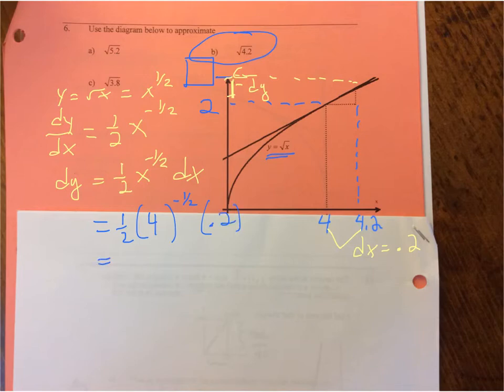I'm going to have 4 to the negative 1/2 times our differential, which is 0.2. If I do a little computation, I'm going to have 1/2. That would also be 4 to the negative 1/2 is 1 over 4 to the positive 1/2. So 1/2 times, well, 0.2 is the same thing as 2/10. One of these 2s will cancel, and I'll have 1/20 is what dy is.